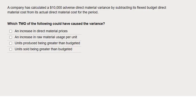A narrative question here on variances. A company has calculated a $10,000 adverse variance on direct materials—so that's bad for profits. They've calculated this variance by subtracting flexed budget direct material cost from its actual direct material cost for the period.